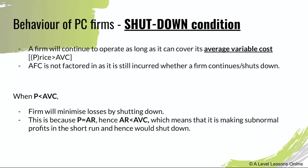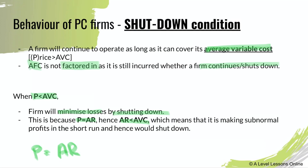There is also a shutdown condition unique to PC firms. A firm will continue to operate as long as it can cover its average variable cost (AVC). Average fixed cost is not factored in since it is incurred whether the firm continues or shuts down. When price falls below AVC, the firm minimizes losses by shutting down. Since price equals AR, when price is less than AVC, it means AR is less than AVC.